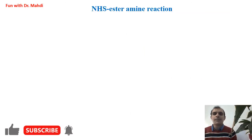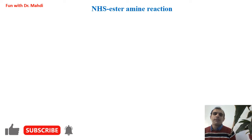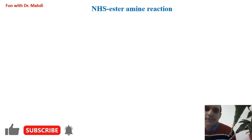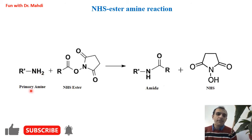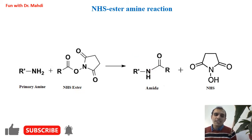As I already mentioned, we will learn about two different types of amidation reaction. The first one is NHS, or N-hydroxysuccinimide ester-amine reaction. It's a reaction between a primary amine and an NHS ester. The product will be an amide. That's why we call this reaction an amidation reaction.